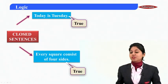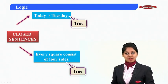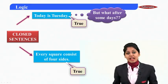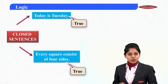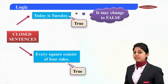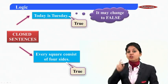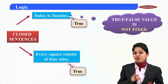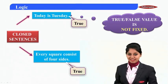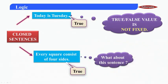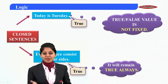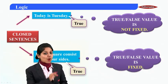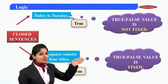But there is a difference between these two sentences. For 'today is Tuesday' — what if tomorrow comes? Tomorrow it will be Wednesday, so it will no longer be Tuesday. The truth value changes from true to false, meaning the truth value is not fixed. While for 'every square consists of four sides,' whether I ask you tomorrow or the day after, it will always remain true. Its truth value is fixed.